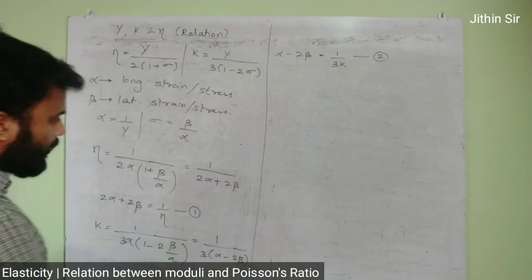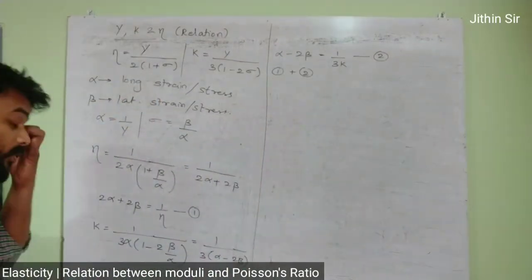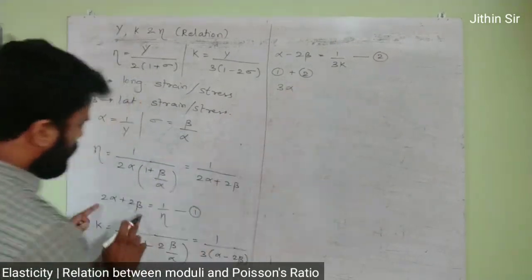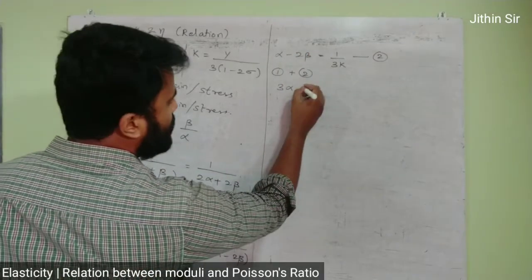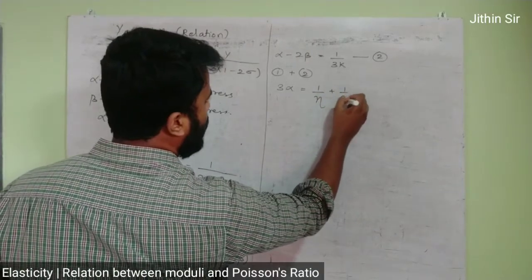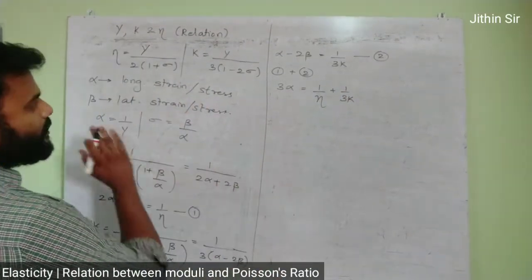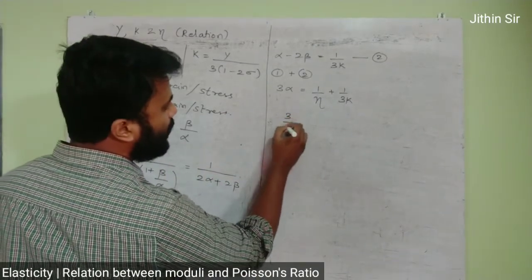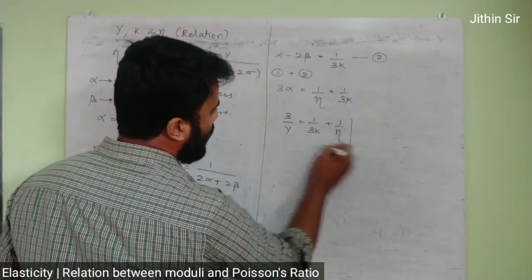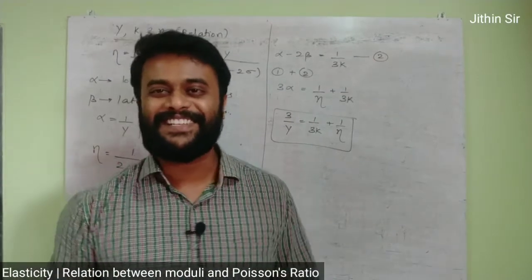Now I will add equation 1 and 2. Adding them, LHS gives 2 alpha plus alpha equals 3 alpha, and 2 beta minus 2 beta cancels. RHS gives 1 by eta plus 1 by 3k. Now, alpha is the inverse of Young's modulus. Therefore, 3 by y equals 1 by eta plus 1 by 3k. That's your relation between Young's modulus, bulk modulus, and modulus of rigidity.